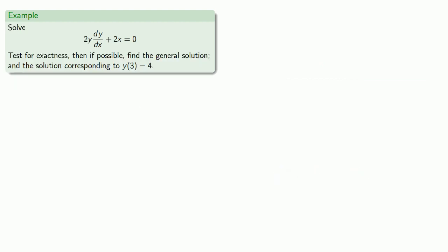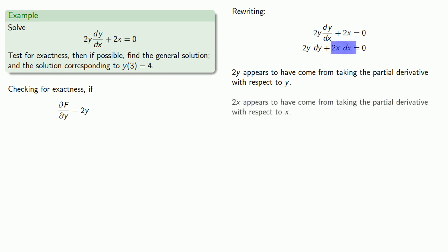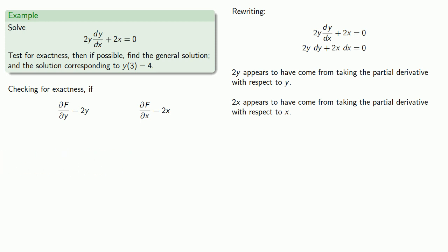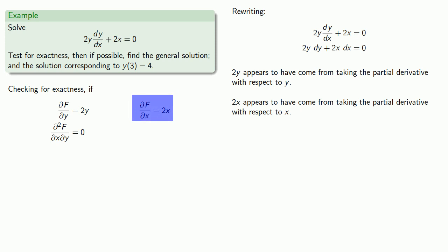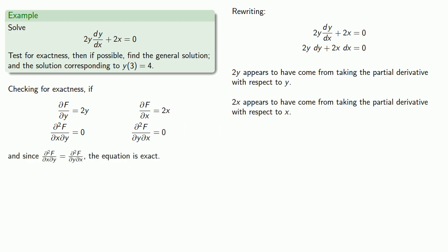To answer that question, let's solve another ordinary differential equation. We rewrite it by splitting the differentials. The term 2y appears to have come from taking the partial derivative with respect to y, so our partial with respect to y is 2y. Likewise, 2x appears to have come from taking the partial derivative with respect to x, so our partial of f with respect to x is 2x. Finding the mixed partial derivatives: differentiating 2y with respect to x gives 0, and differentiating 2x with respect to y also gives 0. Because they're equal, the equation is exact and it's plausible that we have a solution in the form of a level curve.